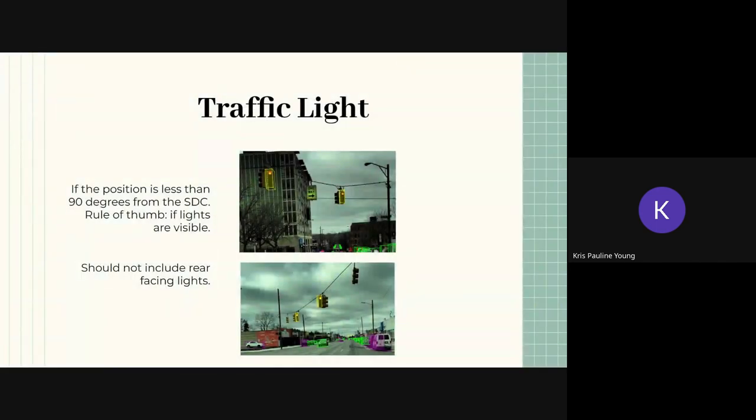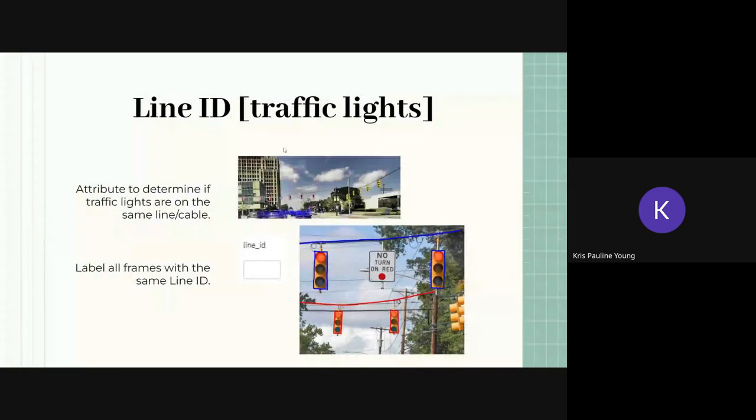Same thing with traffic lights. Traffic lights, front-facing cameras only and at least 90 degrees from the STC. The rule here is if you can see the lights then you have to annotate them. However, if the lights are completely blocked off or they're not visible anymore, then you don't need to annotate them.